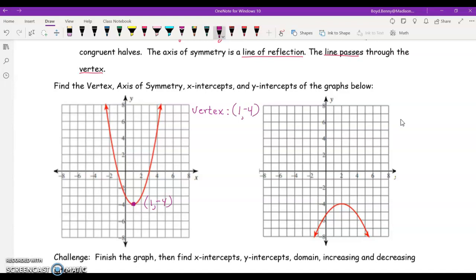Our axis of symmetry is the line that passes through, the vertical line that passes through that vertex. Well, the equation for that line is x equals 1. Notice that it is the x-value of the vertex.